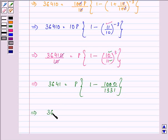So 36,410 equals P times [(1331 minus 1000) divided by 1331], which is P times [331 divided by 1331].